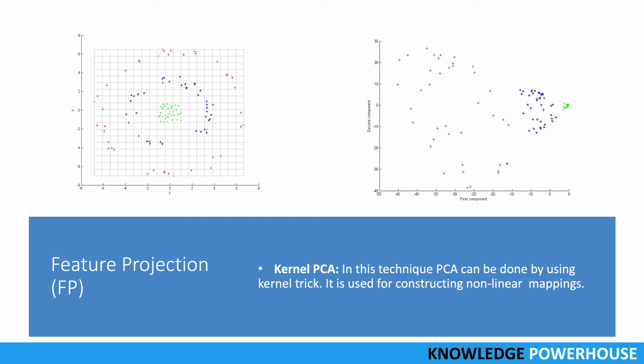Using kernel trick, that can make this data project into a different shape so that we can easily classify it. Now when we apply a kernel function, if you see the green is almost to the left, we have blue in the middle, and then red on the right. It's very easy to classify these and then we can use our modeling on that, which is mainly used for constructing nonlinear mappings.